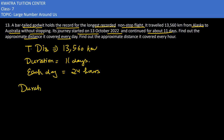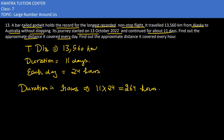The duration in hours would be 11 into 24. We multiply 24 by 11. That gives us 264 hours. So the total duration is 264 hours.